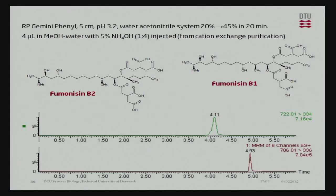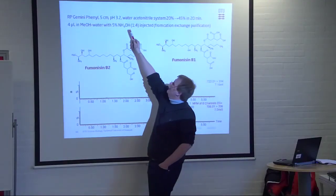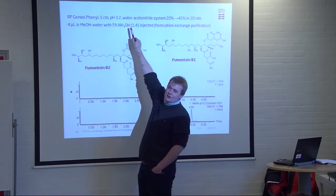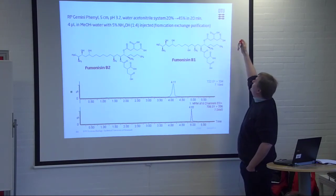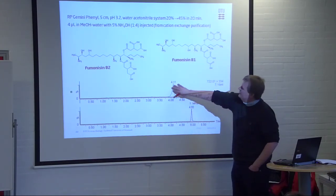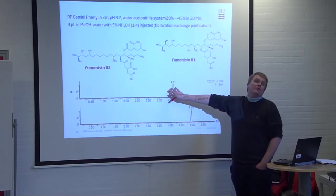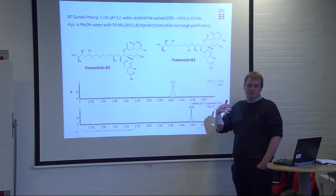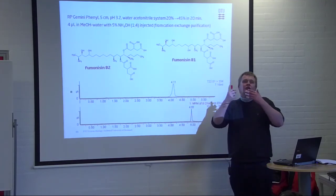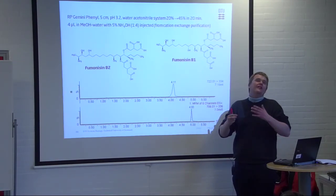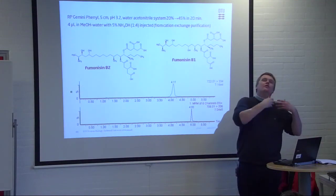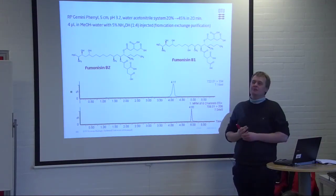Also, pH. So, we recall these are the fumonisins we talked about. So, if we have them in ammonium hydroxide, pH 11 or 12, and we inject a lot, then we also have a problem. And this is why these two isomers, the first isomer is much more broader. So, also, if you have a very different pH, that will make your analyte more polar, you also perhaps have to change the pH of the sample.